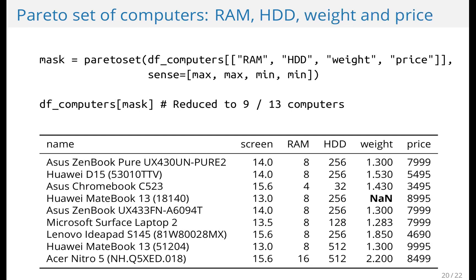I could also add weight, and if I added weight, then the natural thing would be to minimize over weight. And this would reduce the dataset from 13 computers to 9. Notice that one computer has a missing value for weight. In that case, you have to decide what to do about the missing value — you could set it equal to zero, which is what I did, you could remove it from the dataset, or whatever you want, really. But you have to choose how to interpret this missing value.